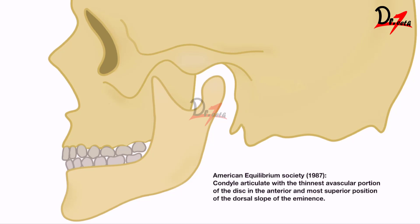The American Equilibrium Society in 1987, exactly ten years later, said that centric relation is when the condyle articulates with the thinnest avascular portion of the disc. So they now included the disc in the definition, specifying the condyle articulates with the thinnest avascular portion of the disc in the anterior and most superior position of the dorsal slope of the eminence.